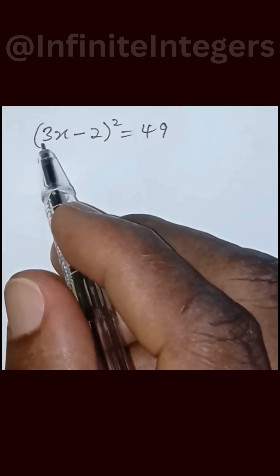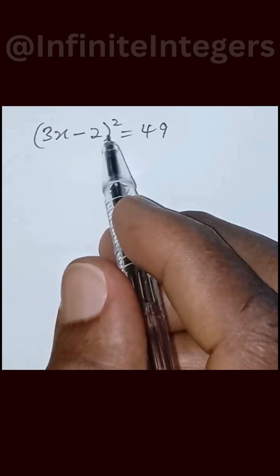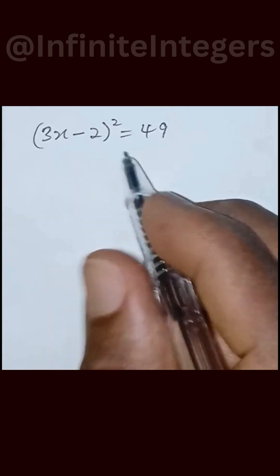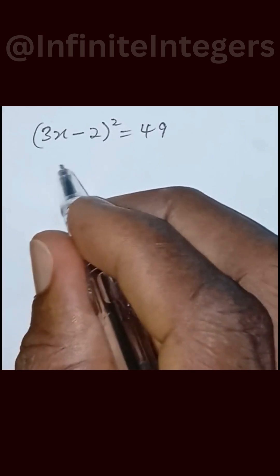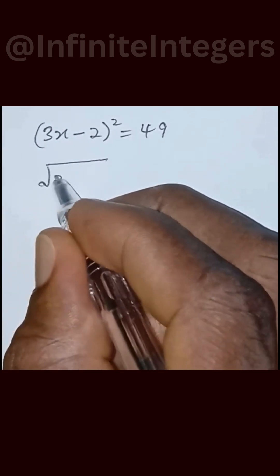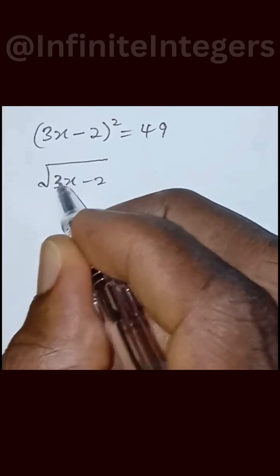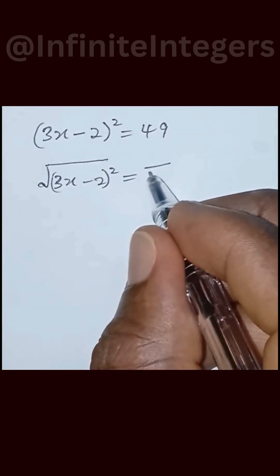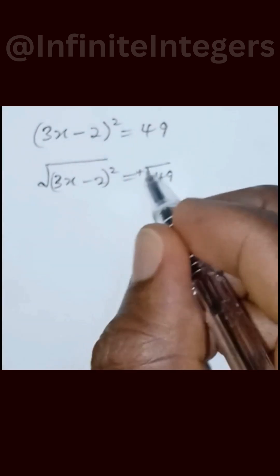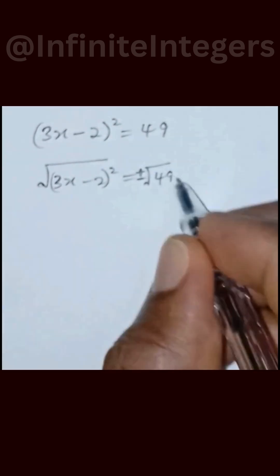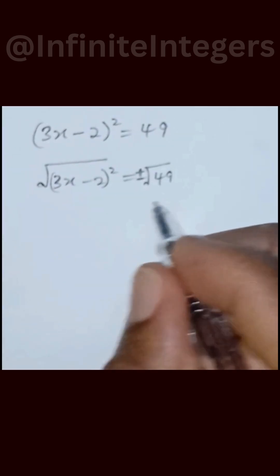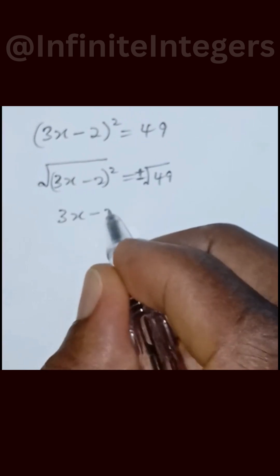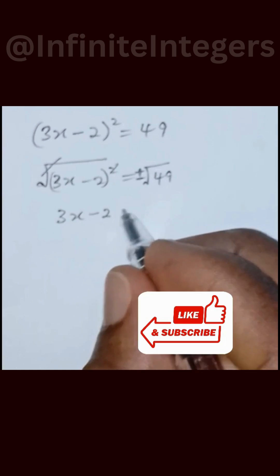Given the expression (3x - 2)² = 49. First thing first, we take the square root of both sides. We have the square root of (3x - 2)² equal to the square root of 49, and that will be plus or minus the square root of 49, which gives us 3x minus 2.